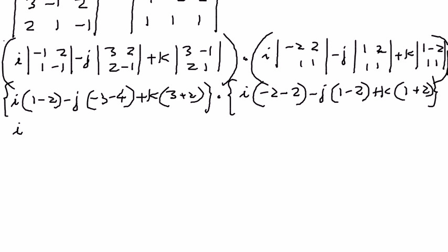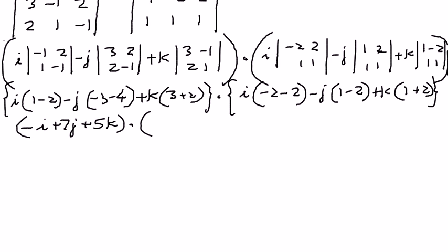When we simplify: 1 minus 2 is negative 1, therefore this gives us negative i. Then negative 3 plus negative 4 is negative 7; negative 7 times negative j gives positive 7j. Then 3 plus 2 is 5, giving plus 5k. We're going to dot product that by: negative 2 plus negative 2 is negative 4, giving negative 4i; 1 minus 2 is negative 1, so negative 1 times negative j gives positive j; and 1 plus 2 is 3, giving 3k.